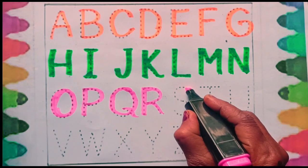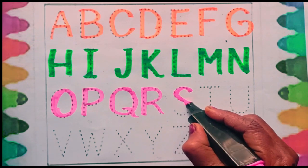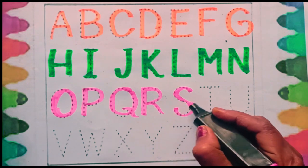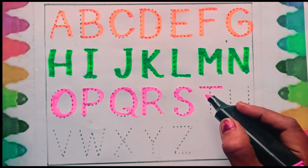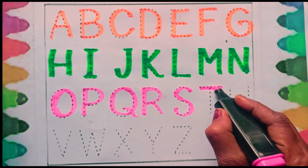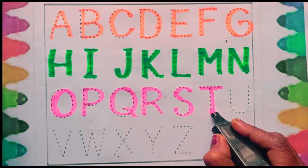R for rabbit. S. S for sun, S for school. T. T for tree, T for tap.